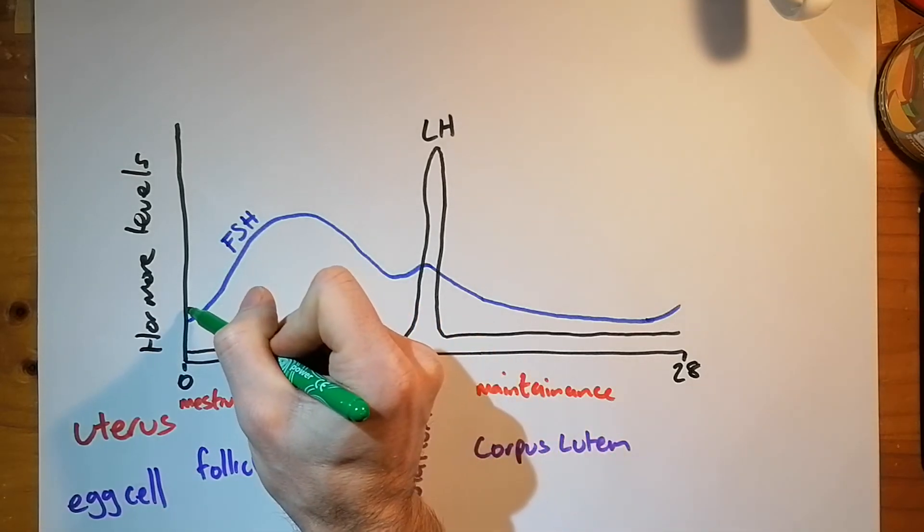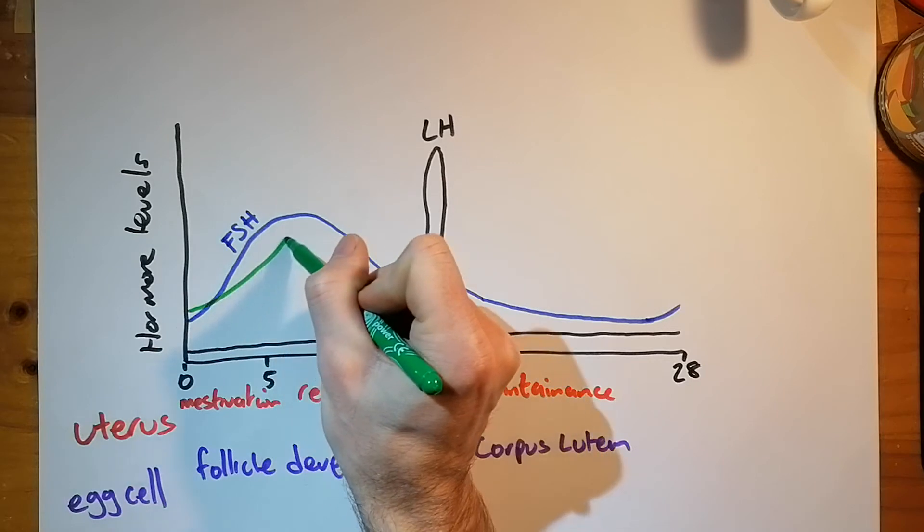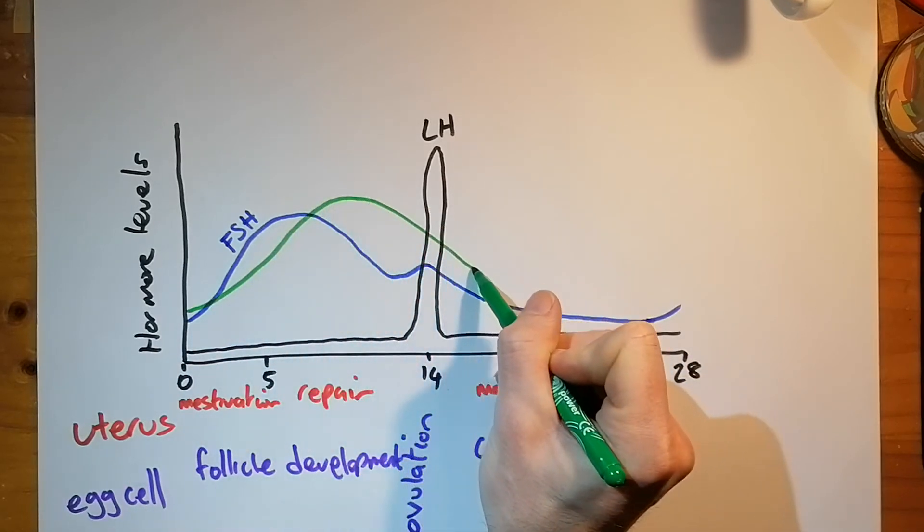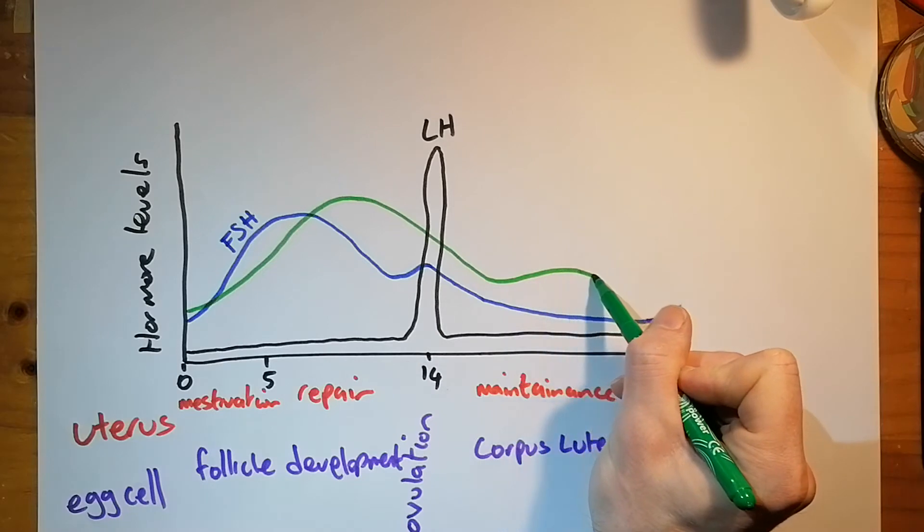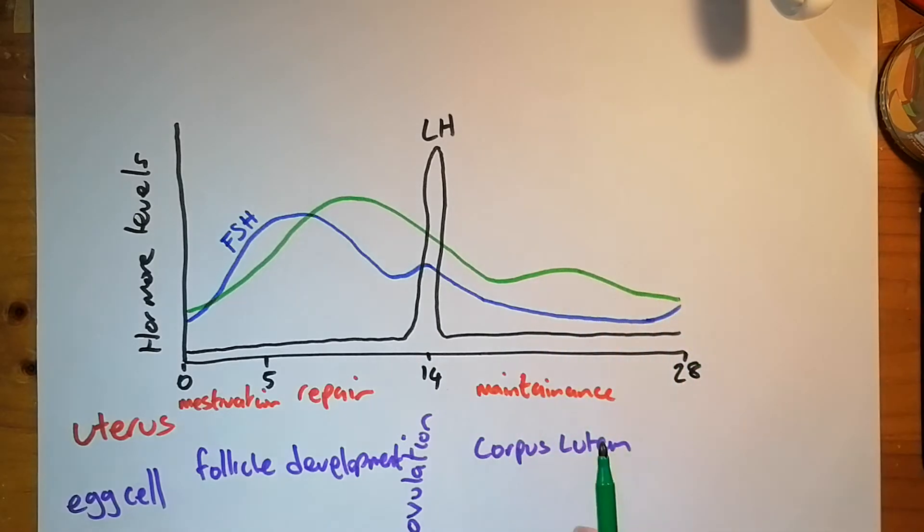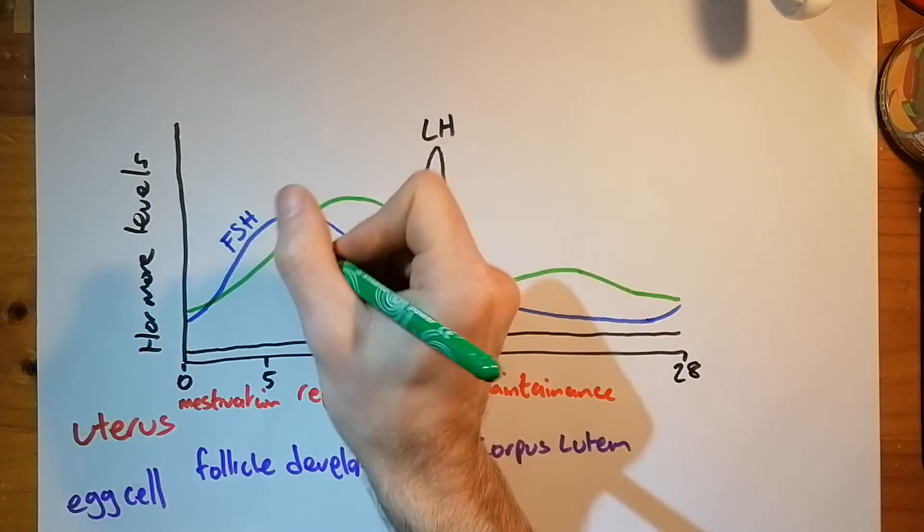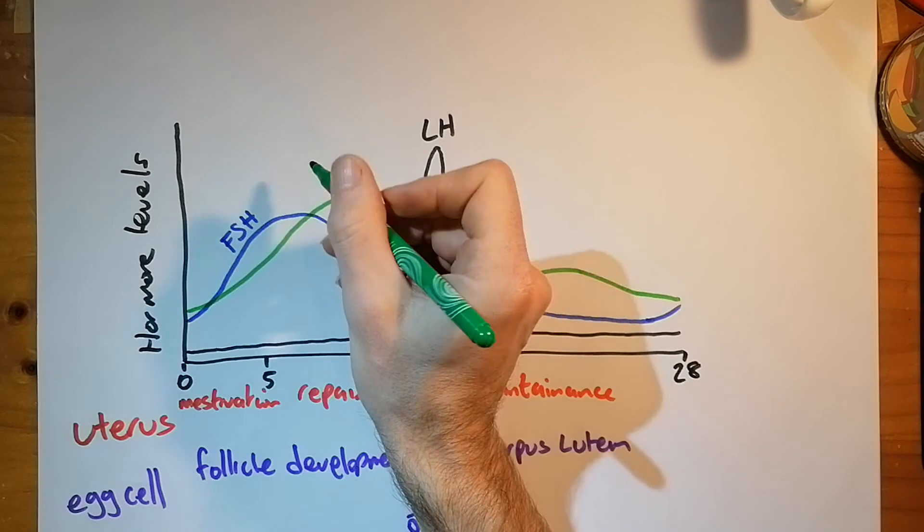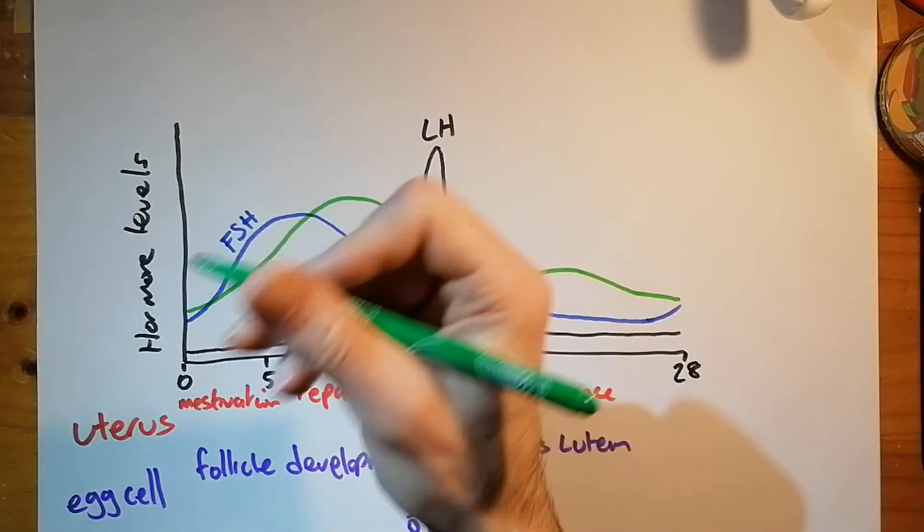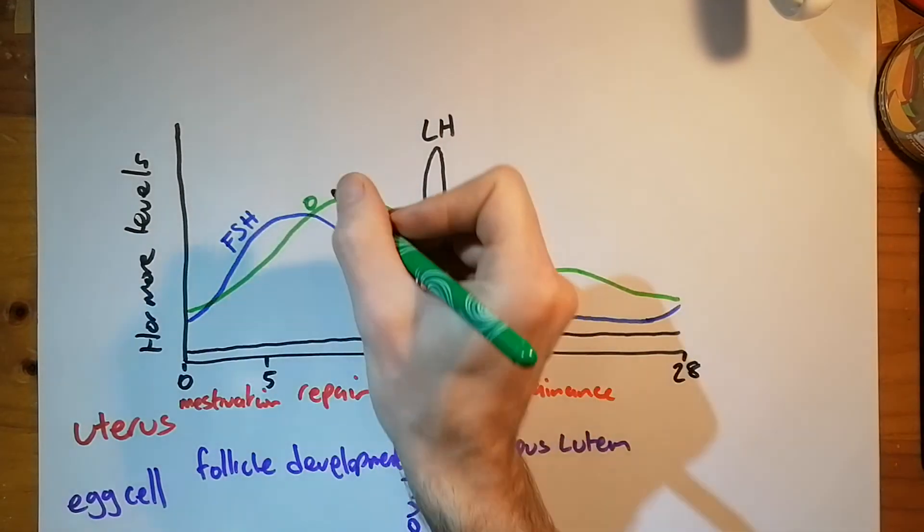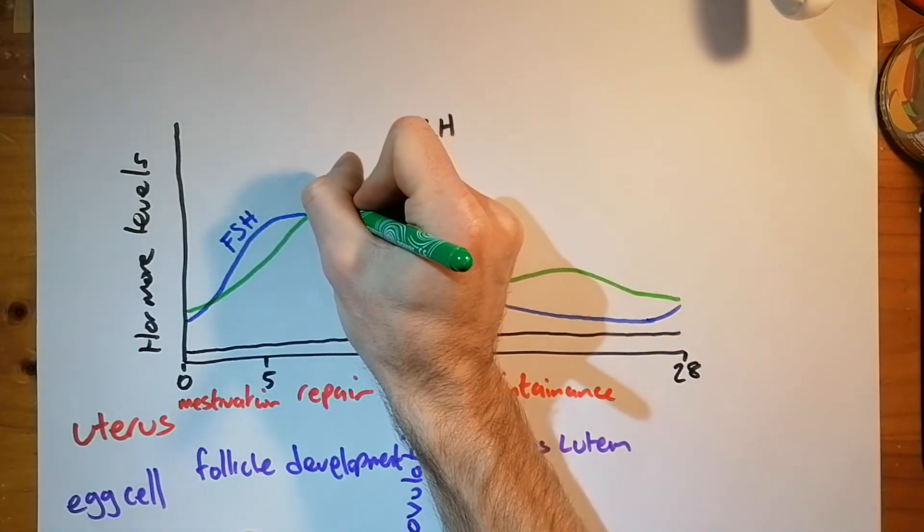You've got estrogen here. Peaks here, goes down, back up a bit, and then falls again. And the primary function of estrogen in the menstrual cycle - it also causes secondary sexual characteristics in females at puberty - but the function of it in the menstrual cycle is it causes repair of the uterus lining following menstruation.